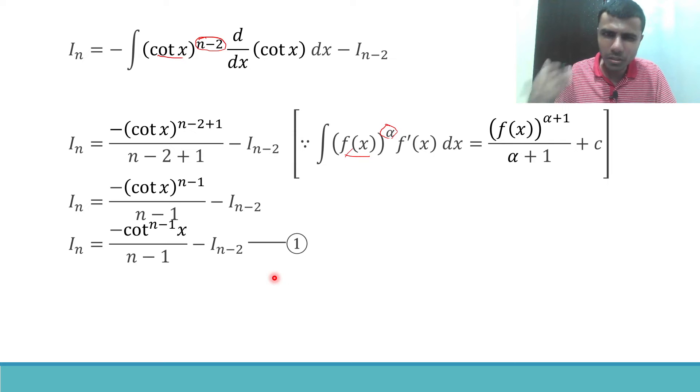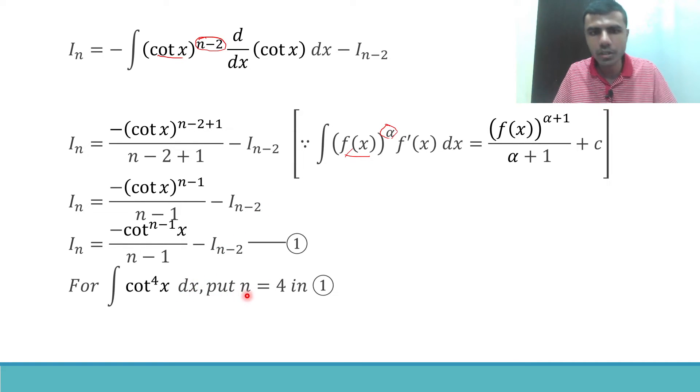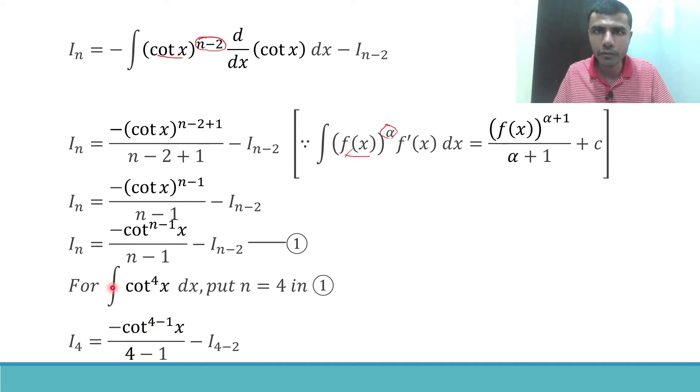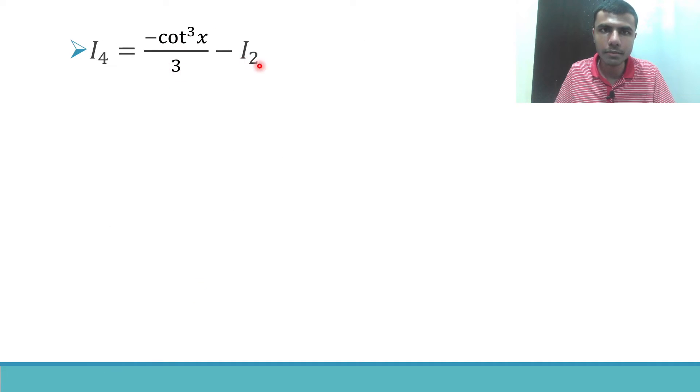Now we only need to find out one thing here. We need to find out integral cot power 4 x dx. To do that just put n as 4 here. Just put n as 4 and then your job is done. If I'll put n as 4, this is my I_4. Not iPhone, I_4. So in place of n I just put 4 here. I_4 is nothing but minus cot power 4 minus 1 x by 4 minus 1 minus I_(4-2). So 4 minus 1 is 3. Minus cot cube x by 3 minus I_2. Hey Krishna, you're not asking me any doubt today. I guess he understood, watching my previous videos.